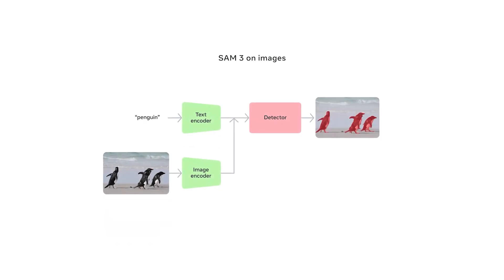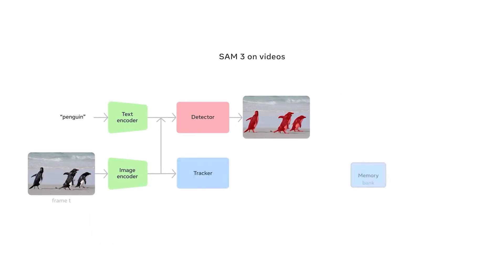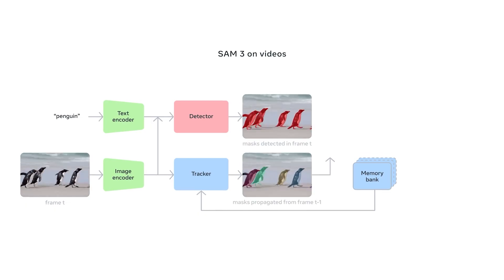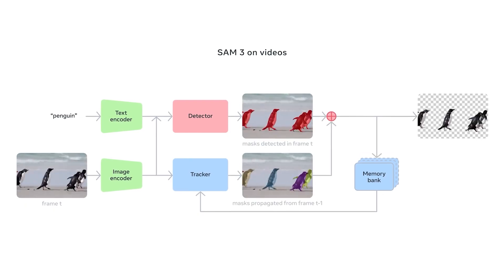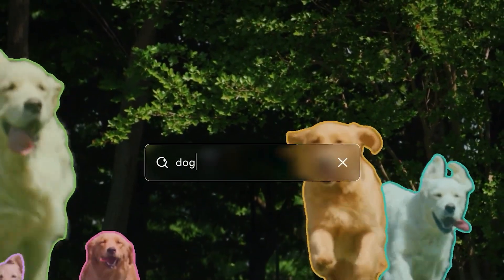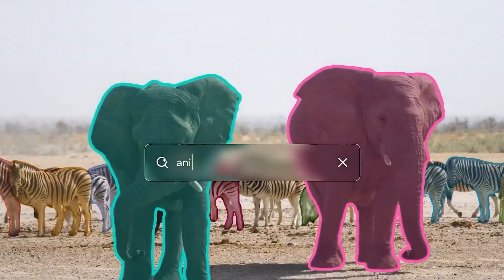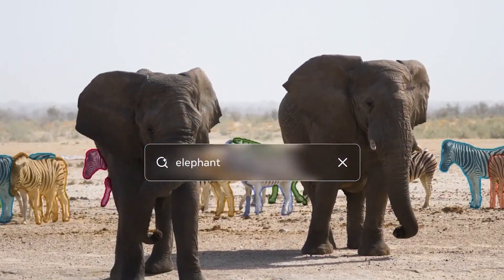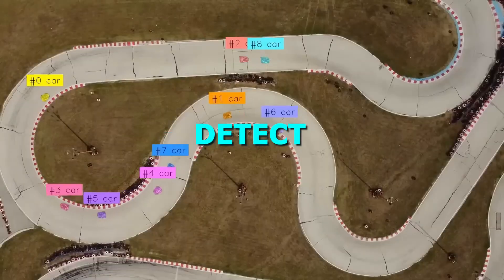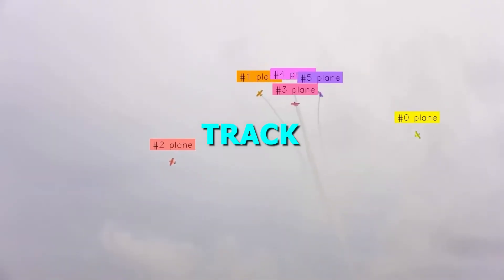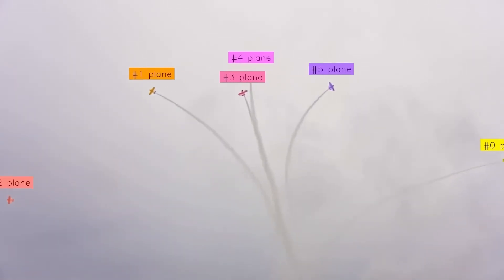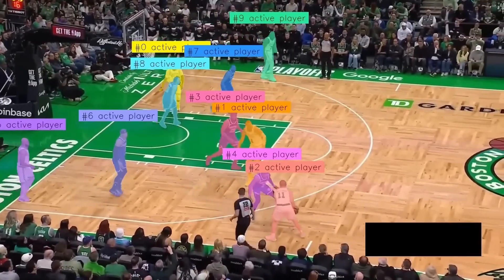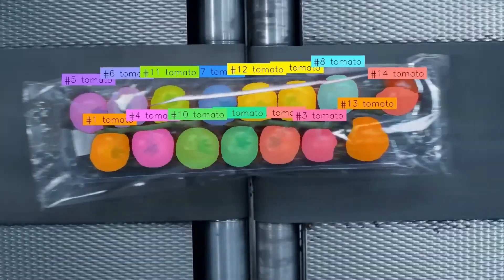SAM3 is built for text-based segmentation. It feels like something pulled straight out of the future. You can describe what you want to isolate in an image or video, and the model instantly finds it. It can detect, isolate, and track objects with nothing but natural language, then turn them into dynamic and editable media.